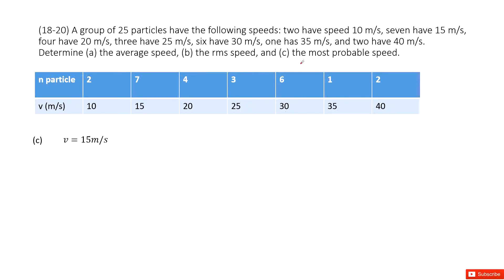The next one, we need to find the most probable speed. The most probable is 7 because it has 7 particles, and the corresponding speed is 15 meters per second. Thank you.